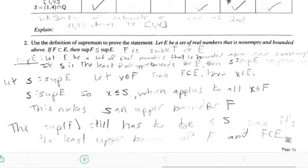So let's first take a look at number two. Number two is the statement that if I have a set of real numbers, we call it E, and if that set is non-empty and if it's bounded from above, and if in addition I have a subset, if F is a subset of E, then the supremum of F is less than or equal to the supremum of E.